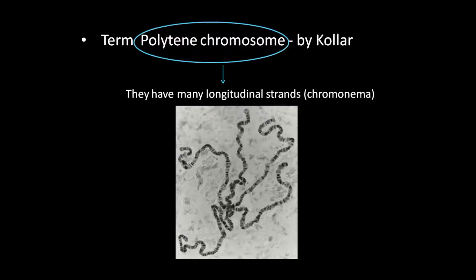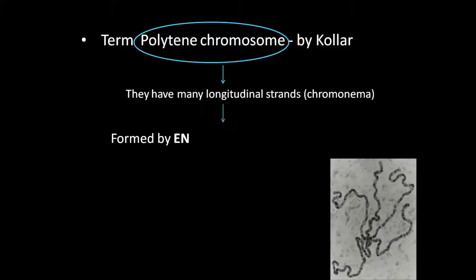This chromosome is formed due to endo-reduplication. In normal cell division there are four phases: G1 phase, S phase, G2, and M phase. G1 phase means the cell will increase its size; S phase involves DNA replication and DNA synthesis; G2 phase the cell prepares to divide; and M phase is mitosis.